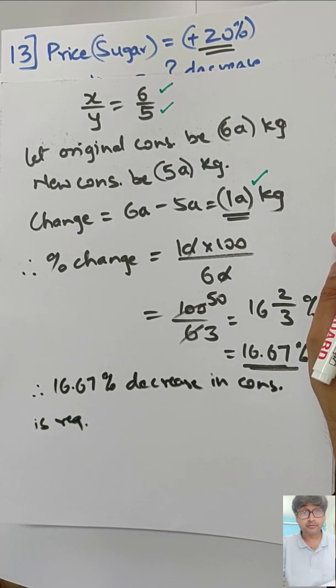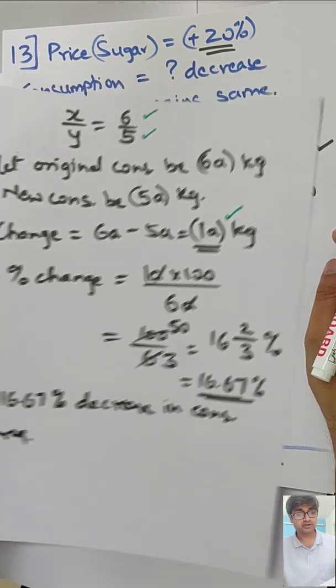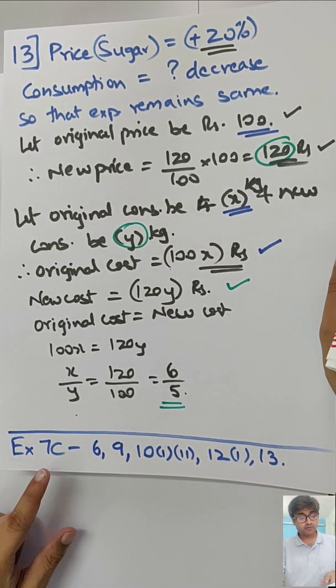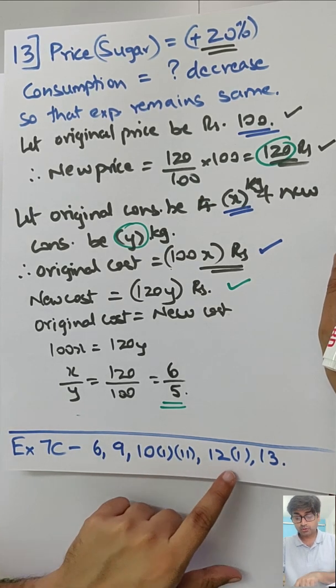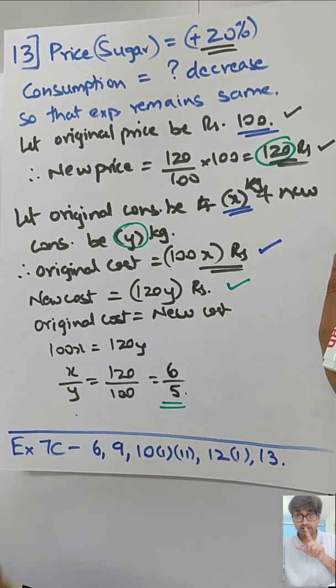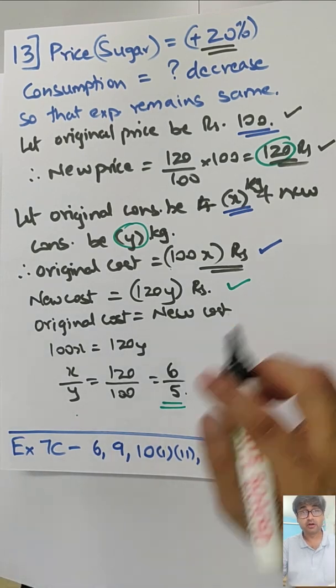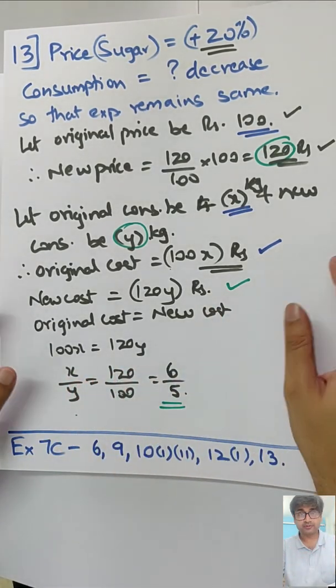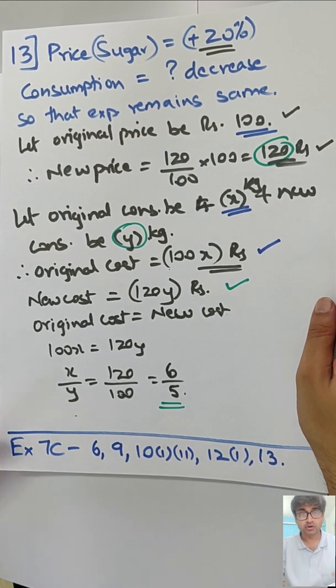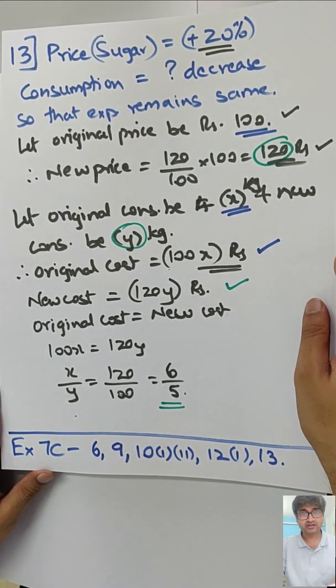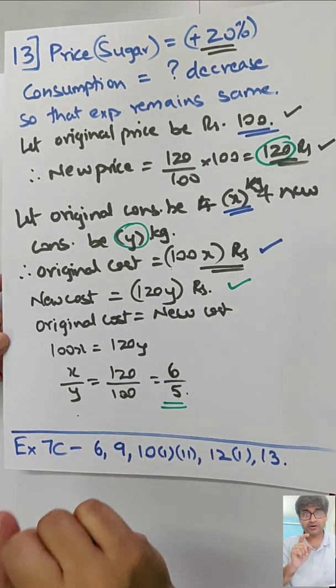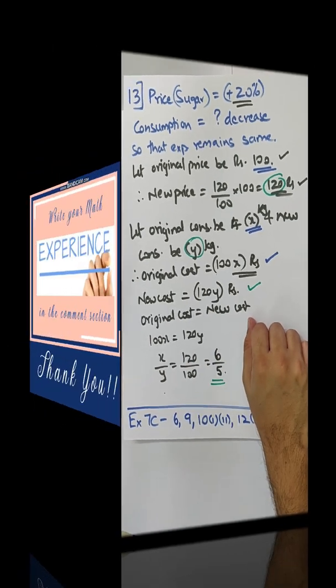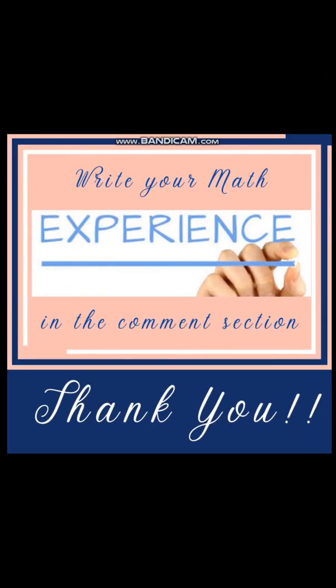For your homework I want you to do 7C sum number 6, 9, 10 part 1 and 2, 12 part 1, and 13. Number 13 please do it again, it's a very good question. I hope you followed this entire chapter and really enjoyed it. If you did please let me know in the comment section. Until the next video take care, stay safe, pray for everyone, and be honest. Bye. Please do write your math experience in the comment section, thank you.